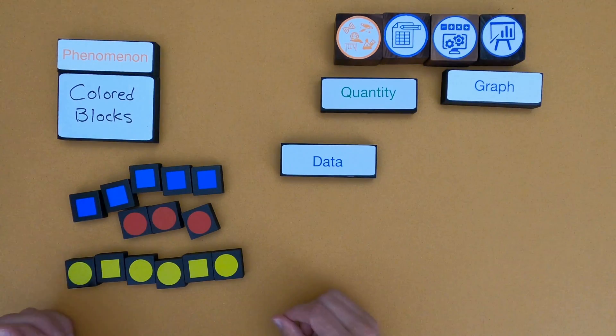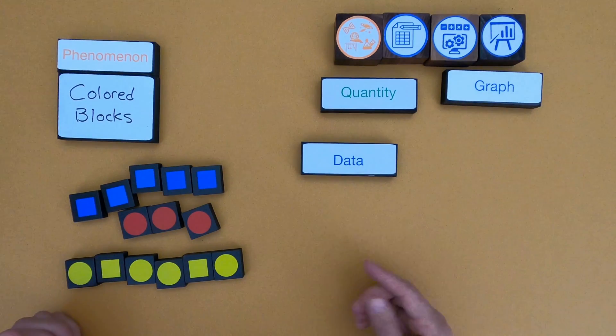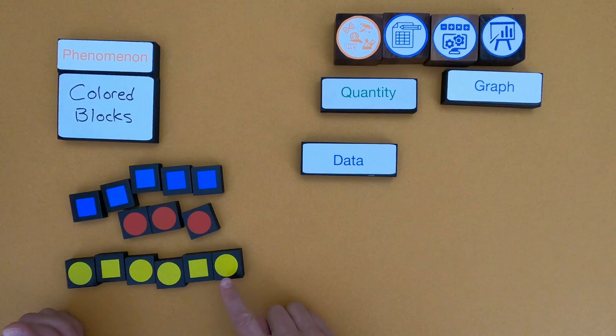Okay, so this is the phenomena. What I'm going to do is put together a simple data table in here. It'll have qualities of these objects, but it'll also have quantities. So let me fill that out.